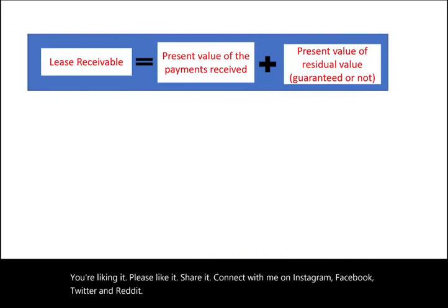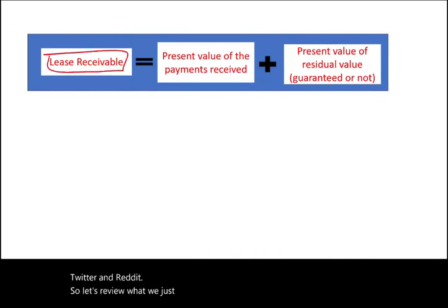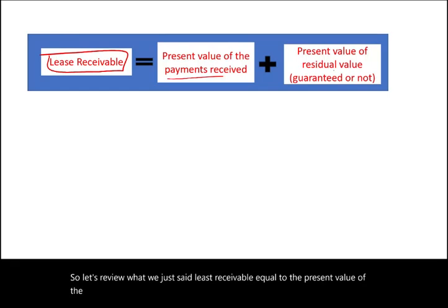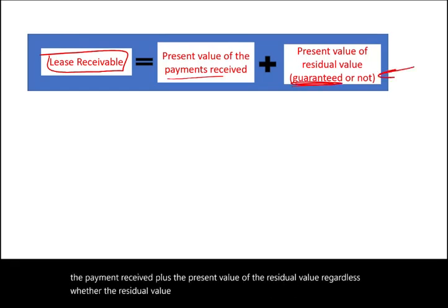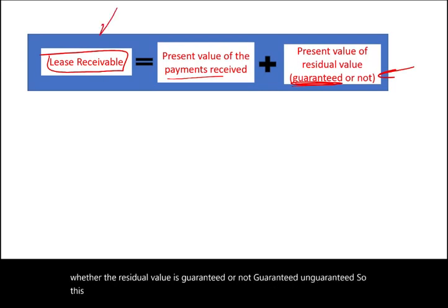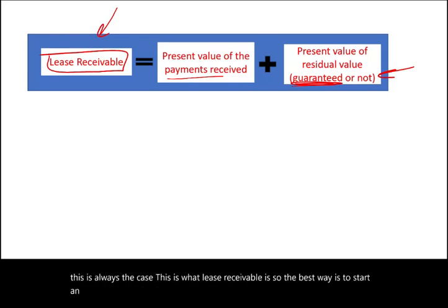To summarize: the lease receivable equals the present value of the payments received plus the present value of the residual value, regardless of whether that residual value is guaranteed or unguaranteed. This is always the case. Now let's start an example illustrating both scenarios.